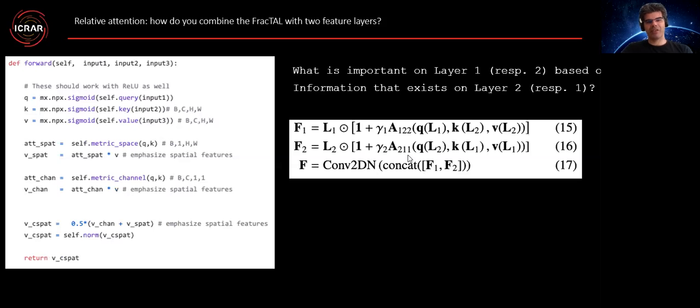Second question is, okay, now you have change detection. You're going to compare two different images. How do you use attention between two different images? And then we addressed them. We thought about the concept of relative attention. The idea here is that what is important in image one is the information that exists in image two, and we can do the symmetric operation if it is necessary, which is here the case.